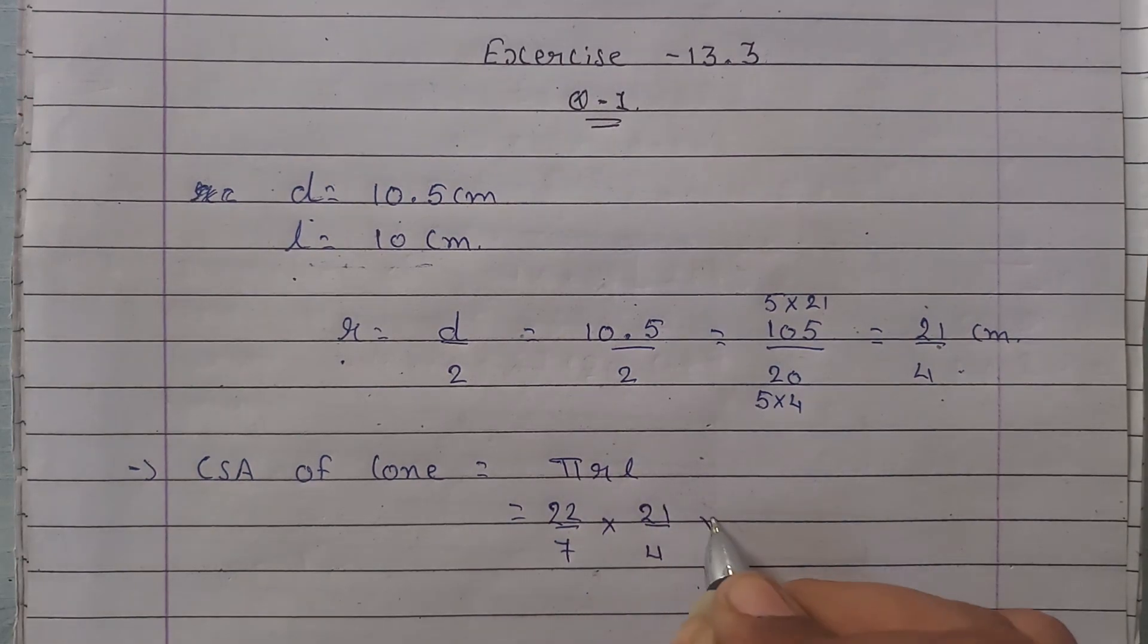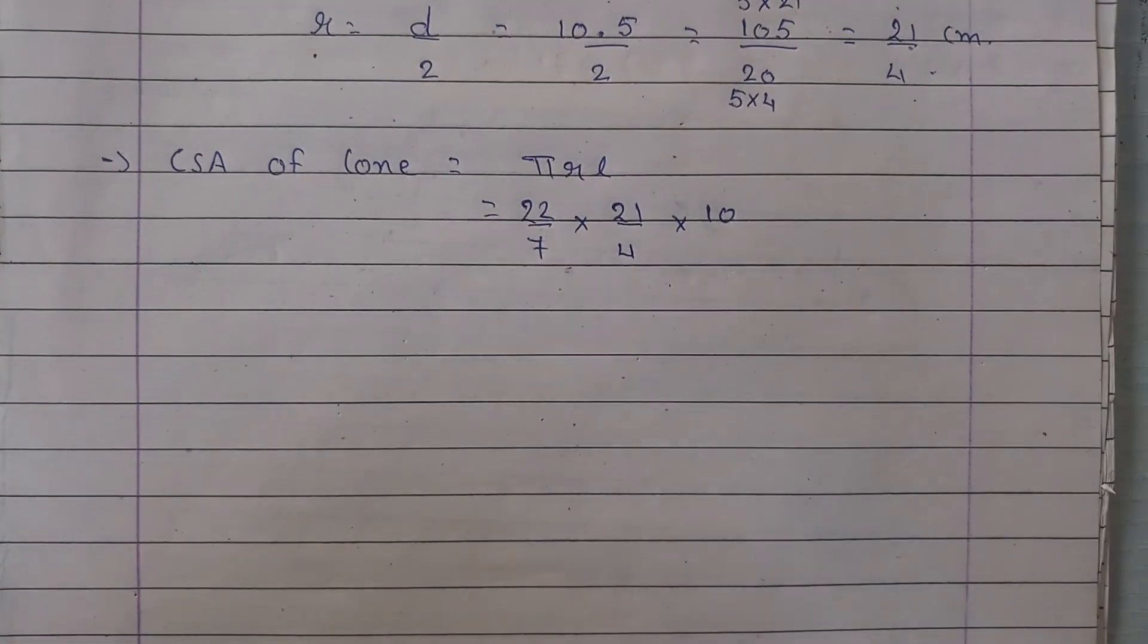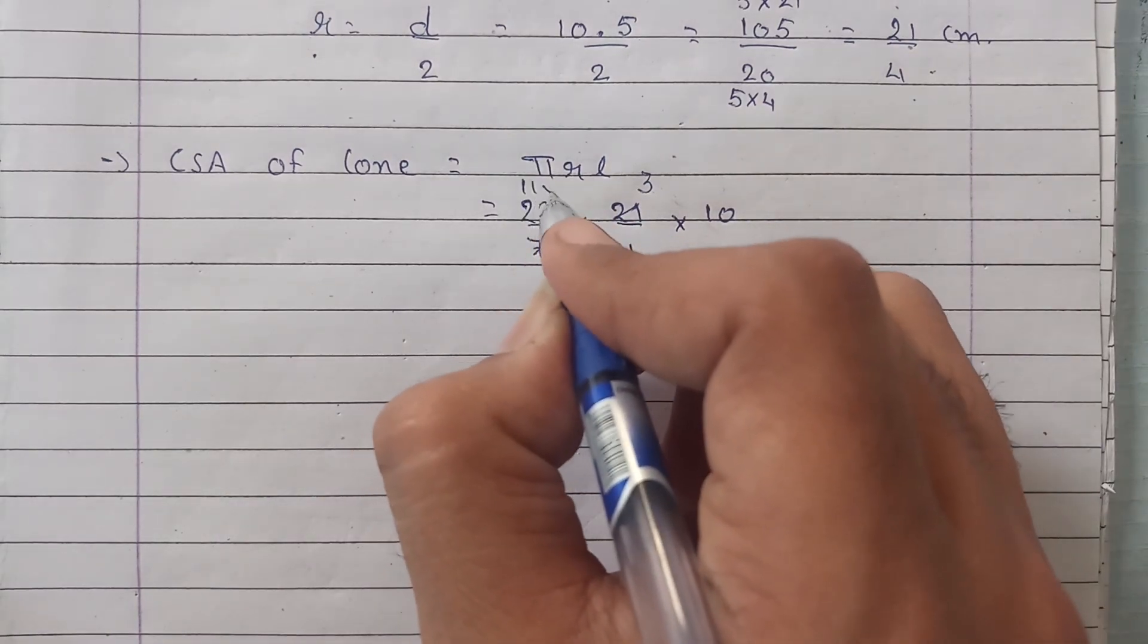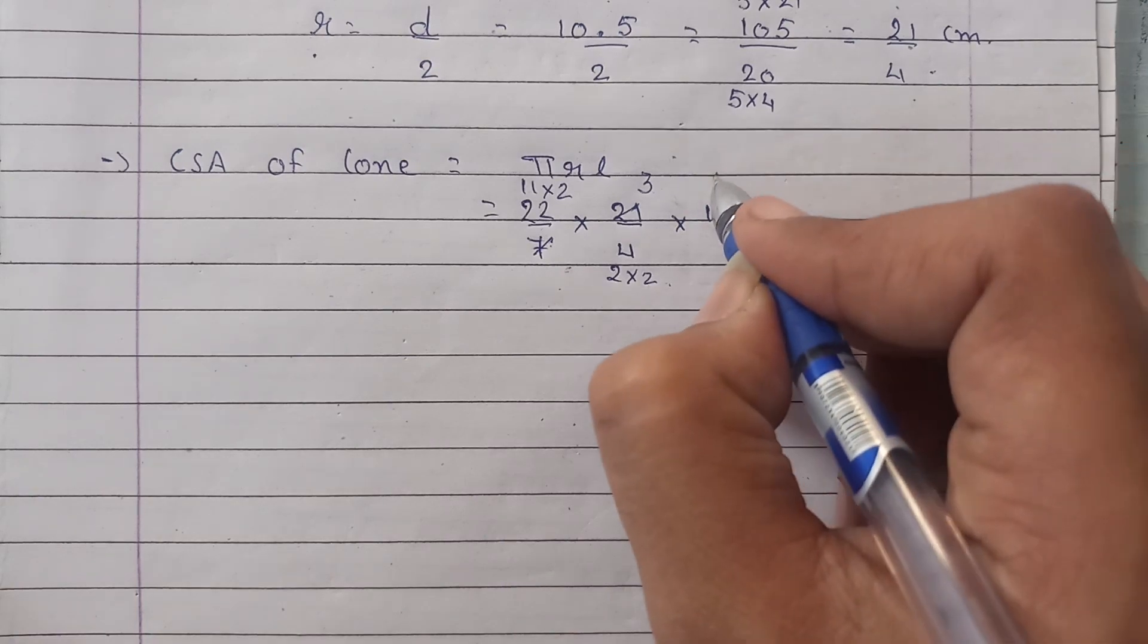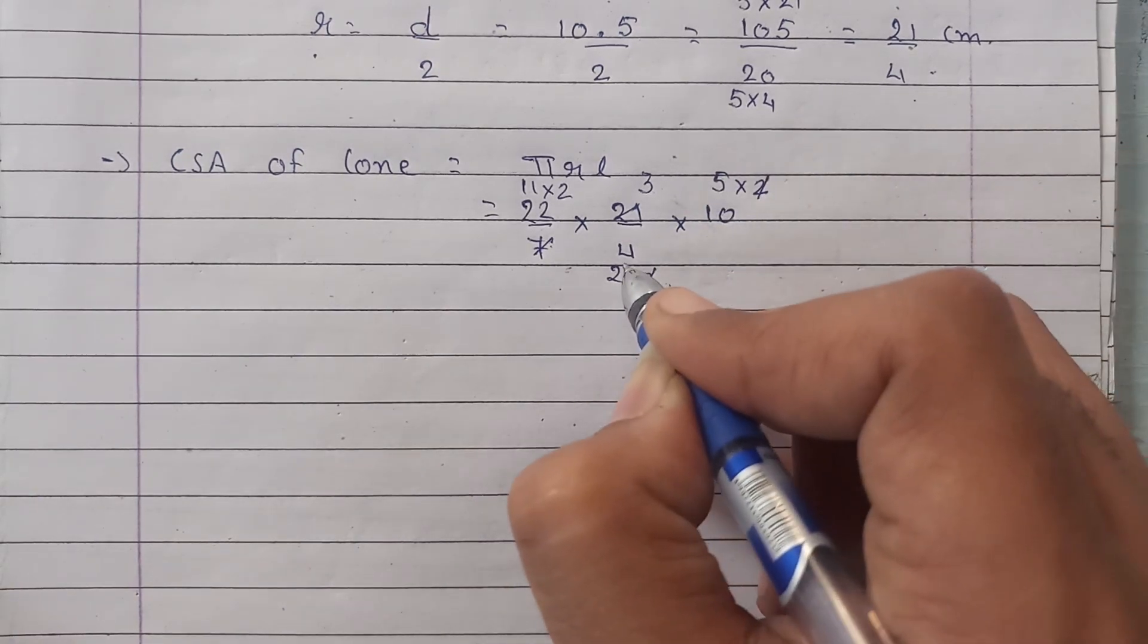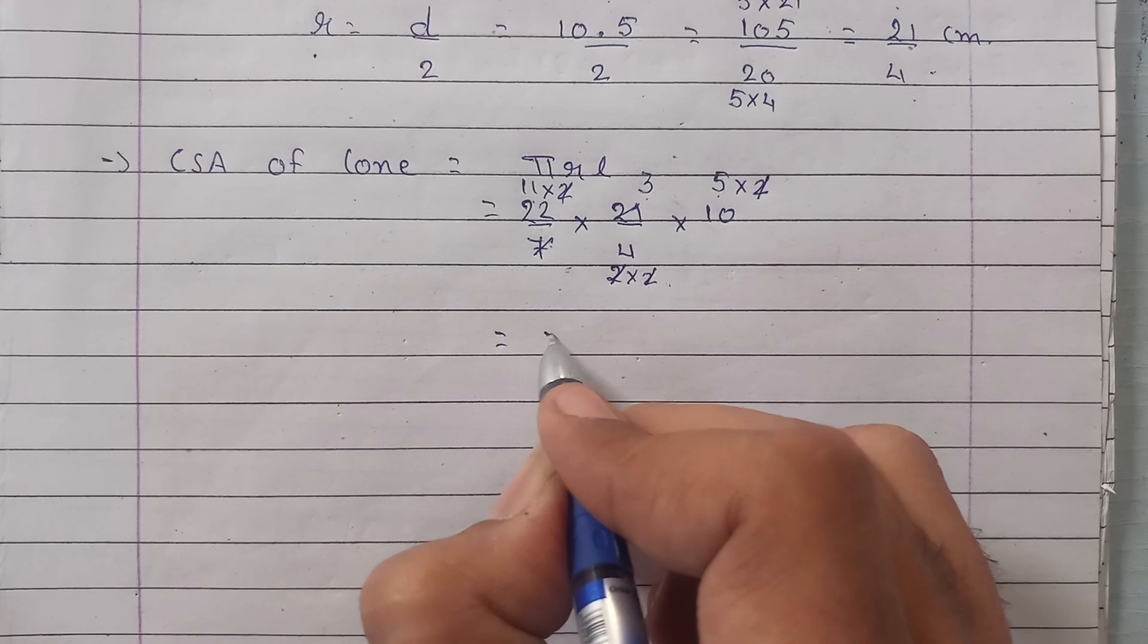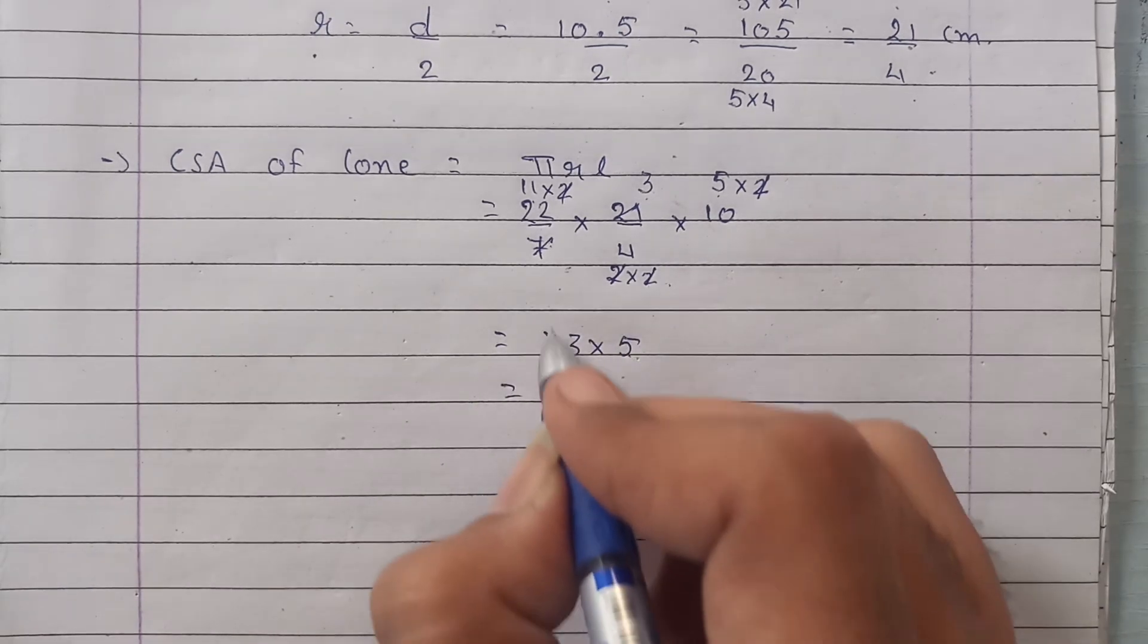So this is 22 upon 7, radius is 21 upon 4, and the slant height is 10. Now on solving this we will have 7 into 3 is 21, here it will be 11 into 2, and here it will be 22 into 2, aur ye ho jayega 5 into 2. So ek 2 yaha pe cut kar do, ek 2 yaha pe cut kar do.